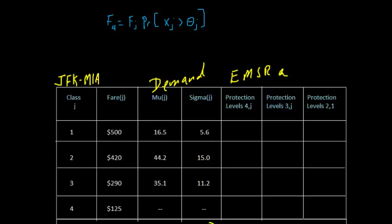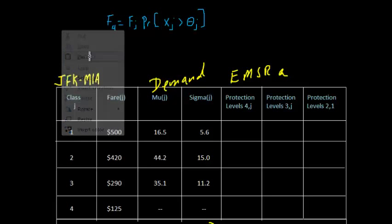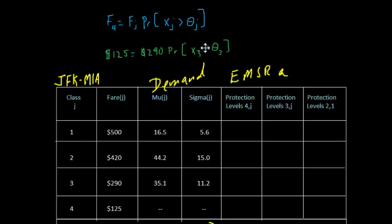Let's start calculating our first protection level — for class 4 against 3. There's one unknown in this equation, theta, and we have two knowns: fare 4 and fare 3. On the left-hand side we have fare 4, which is $125, and fare 3, which is $290. So now we have to solve for theta, our decision variable. We have to choose the theta, the protection level, that makes the right-hand side — the expected marginal seat revenue — equal to the left-hand side.